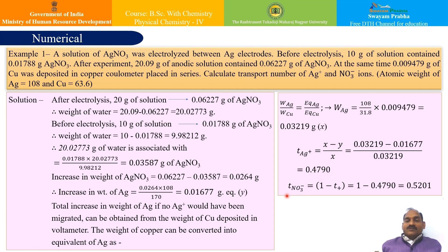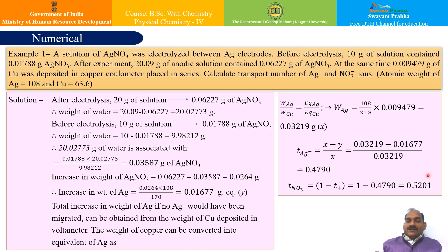Likewise, the transport number of nitrate ion is 1 − T+ = 1 − 0.4790 = 0.5210. This way we can find out the transport number of nitrate ion and silver ion.